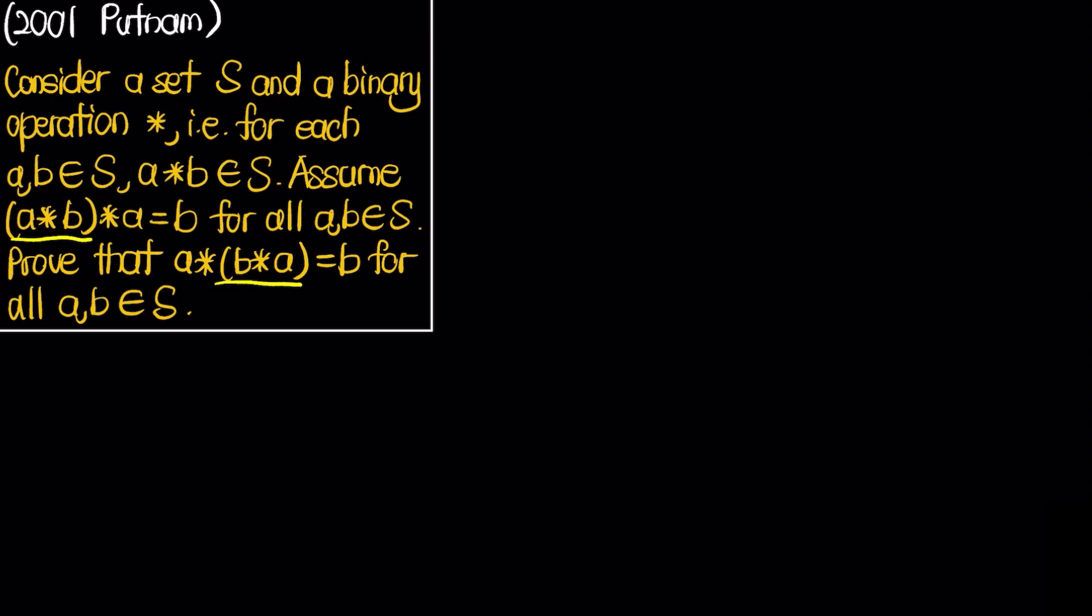What we can do is that based on the rule (A star B) star A equals B, we can actually substitute values to replace this A and B.